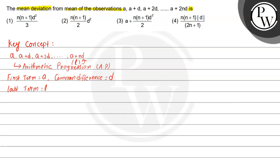If we have any series and we need to find its sum, we can directly write: the sum of n terms of an AP is equal to n divided by 2, multiplied by the first term plus the last term. So the total number of terms is n, and the sum Sn = n/2 × (a + l).